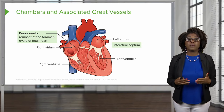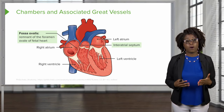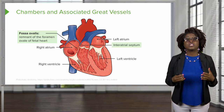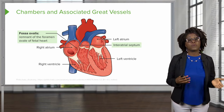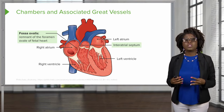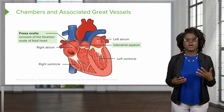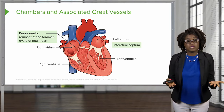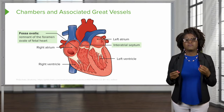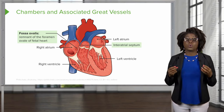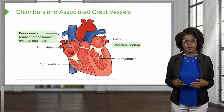The fossa ovalis is a remnant of the foramen ovale of the fetal heart, which is a shunt that allows blood to go from the right atrium to the left atrium, skipping the lungs in the fetus since fetuses are not using their lungs. This foramen closes at birth and becomes the fossa ovalis.